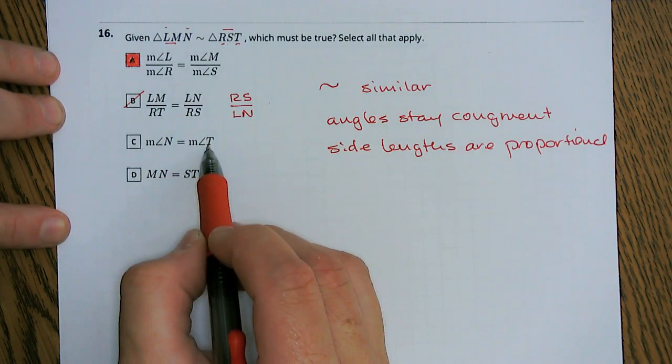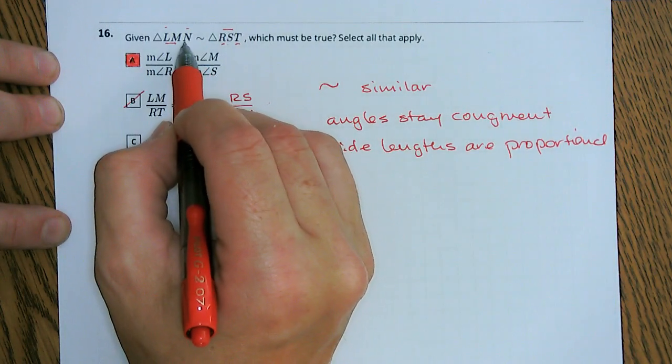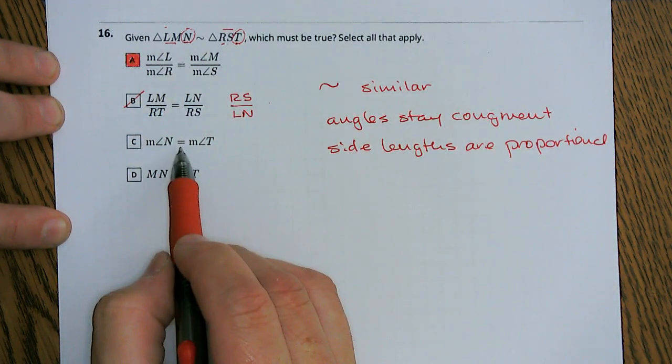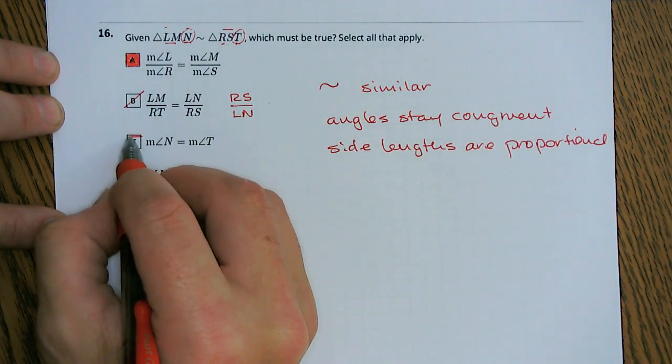The measure of angle N equals the measure of angle T. Well absolutely, N and T, right, are corresponding angles, and angles stay congruent, that means they stay equal, so C is correct.